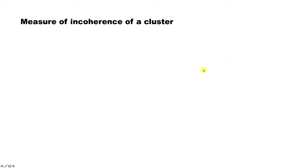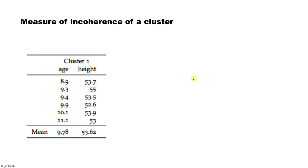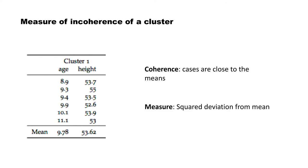Let's return to the measures of incoherence. The measure of incoherence of a cluster is basically the amount of variety there is — the amount of variability. Essentially, it's the sum of squared deviations from the mean. Coherence means the cases are close to the mean, meaning they are all very similar, and the measure is simply the sum of squared deviations from the mean.